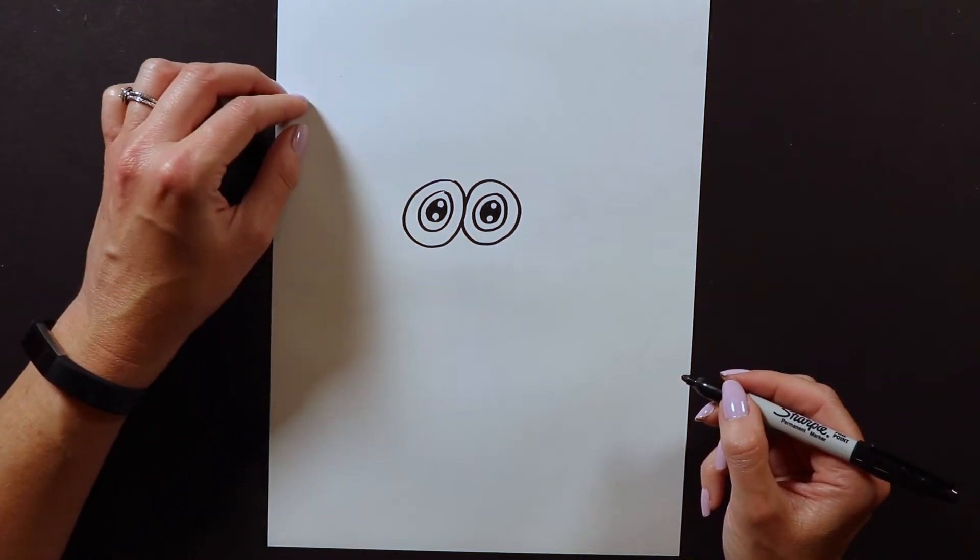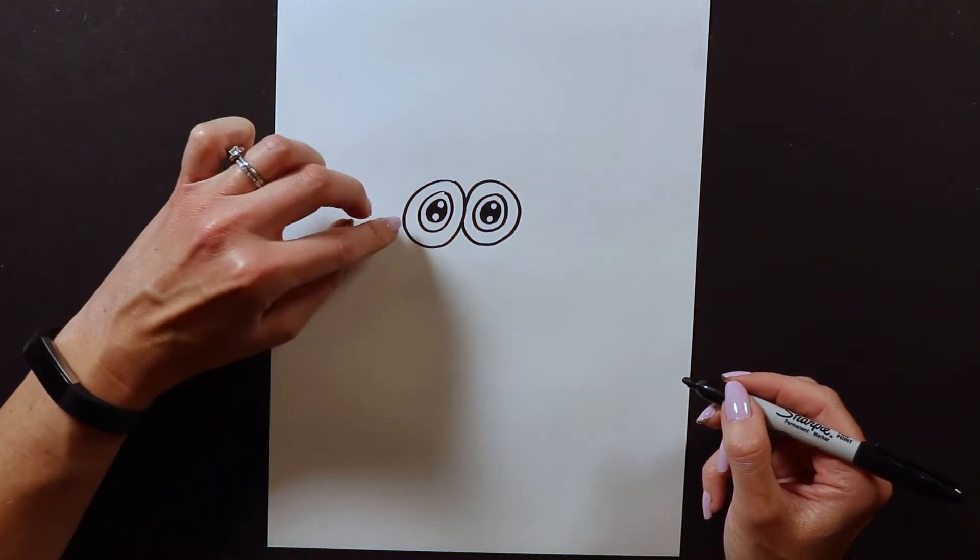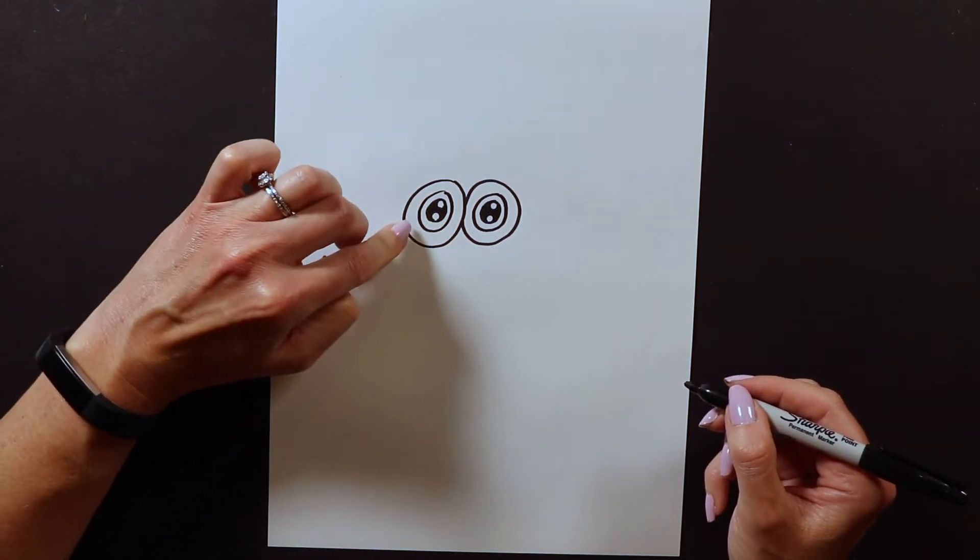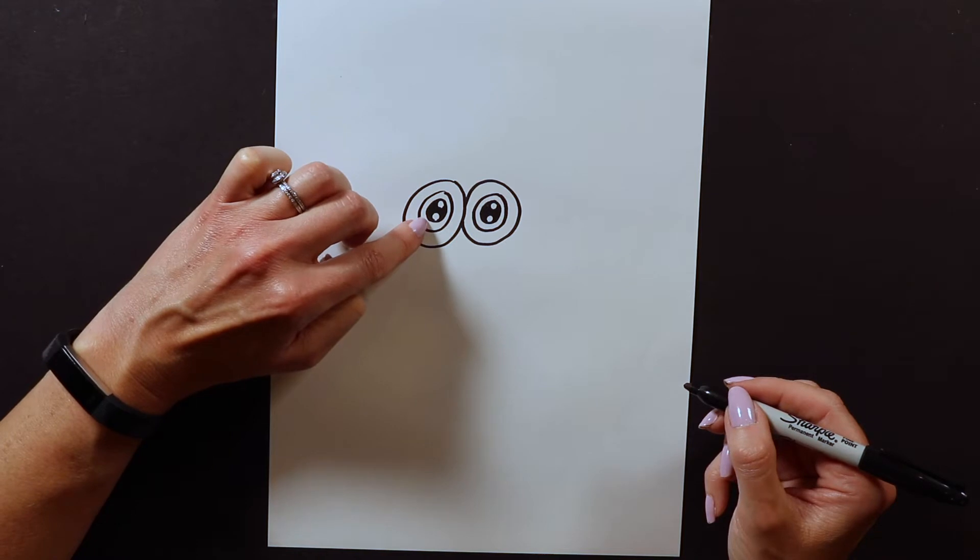After we have our eyes, there's three circles. One, two, three. There's even more circles if you count the sparkles. There's an outer circle, a middle circle, and an inner black circle.